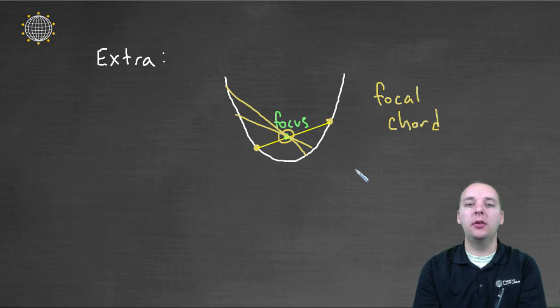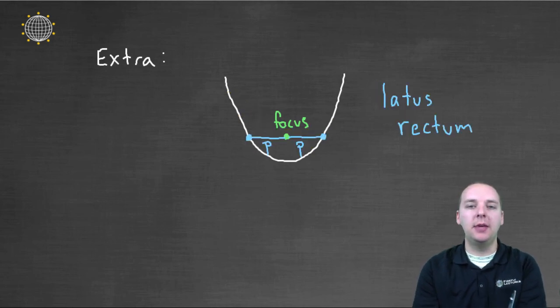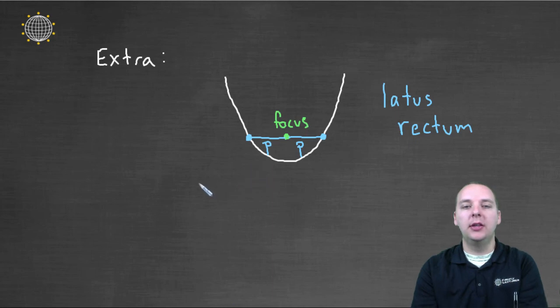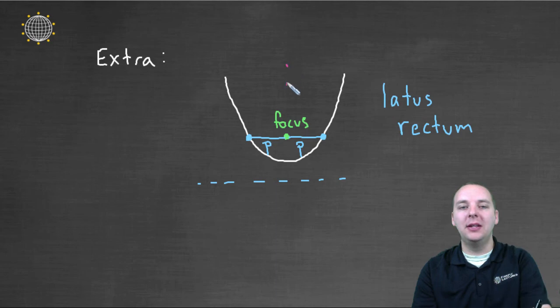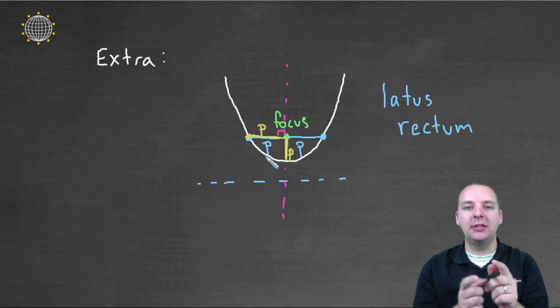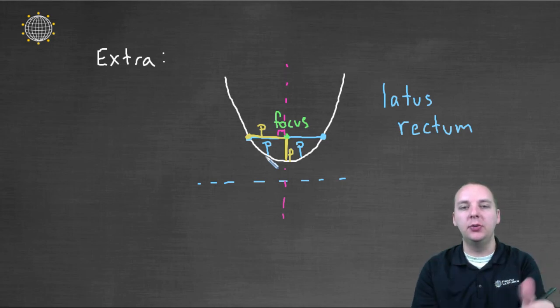Now there's one focal chord in particular that we're often asked about. It's got a funny name. It's called the latus rectum. Now this is a focal chord that's actually, you could say it one of two ways. You could either say parallel to the directrix. In other words, it's horizontal when the directrix is horizontal. Or you could say that it's perpendicular to the axis of symmetry. Either way of saying that's fine. And for the latus rectum in particular, being that you know that this distance here is P, and this is on the parabola, then this distance here is also P. And so the length of the latus rectum is actually 2P. It's actually 2P since it's perpendicular to the axis of symmetry. So anyways, there's just a couple little extra details there.